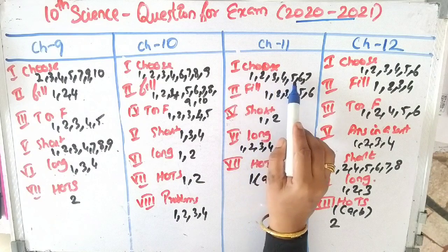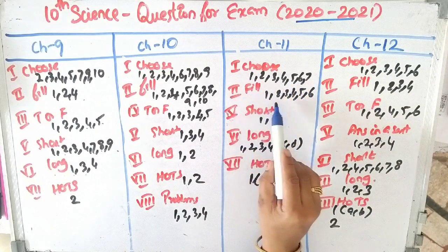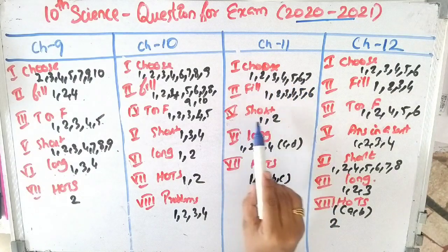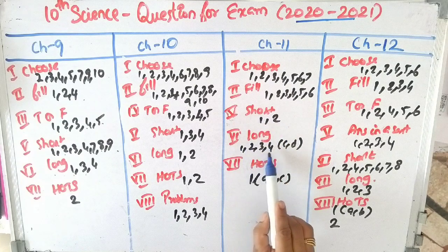In chapter 11, choose the best: questions 1, 2, 3, 4, 5, 6, 7.